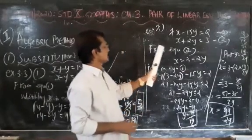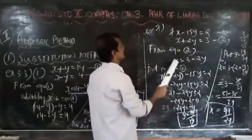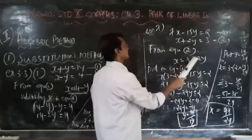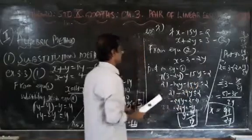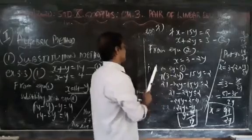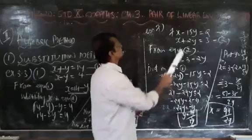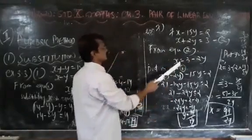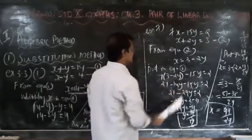From equation number 2, which is x plus 2y equal to 3, we bring 2y to the right side to get x equal to 3 minus 2y. We now put this value of x into equation number 1, which is 7x minus 15y equal to 2. Substituting: 7 times (3 minus 2y) minus 15y equal to 2.